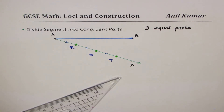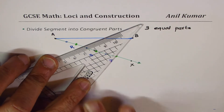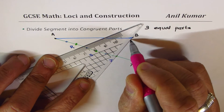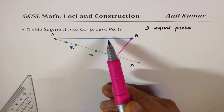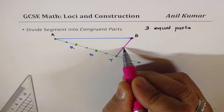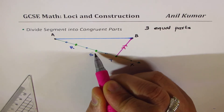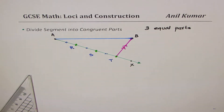Now join T with B. If we draw lines parallel to TB from points R and S, we will be able to divide AB into three equal parts. To do that, let's follow the procedure we just learned for drawing parallel lines.